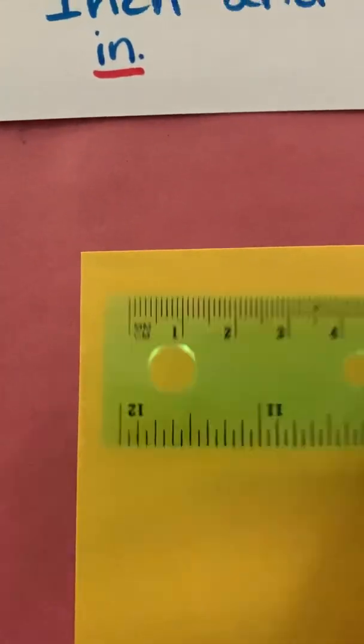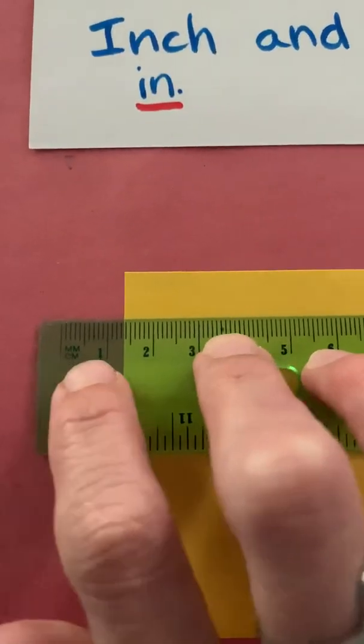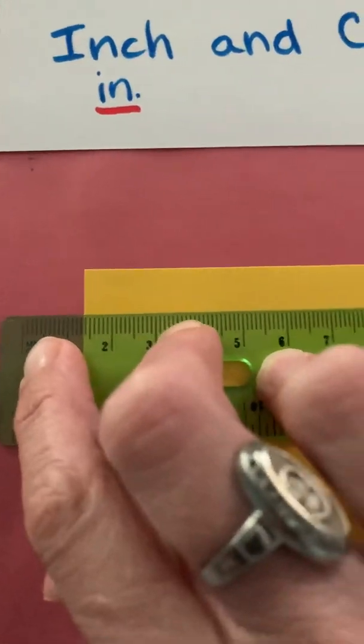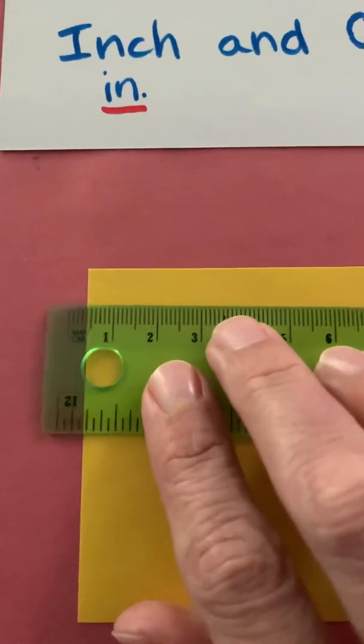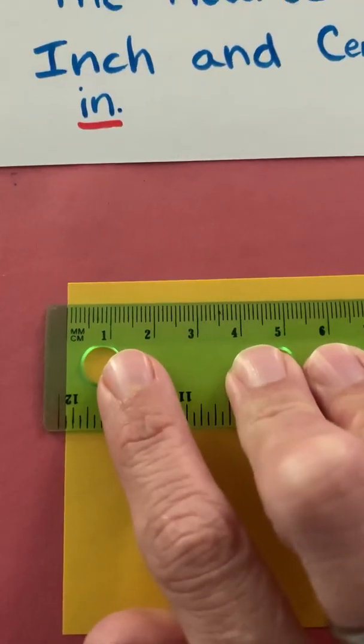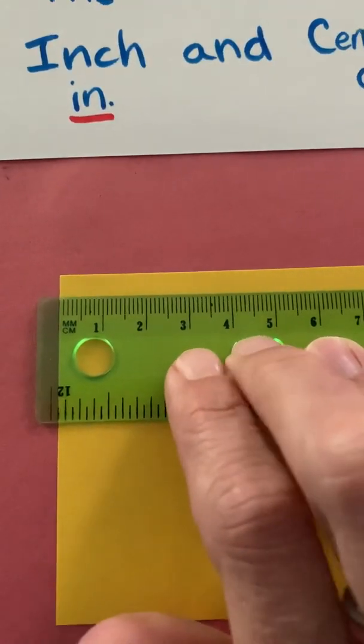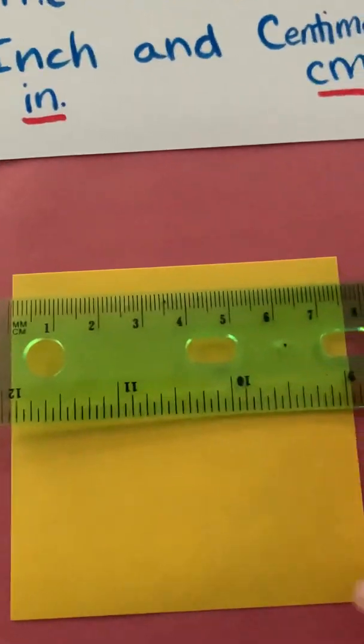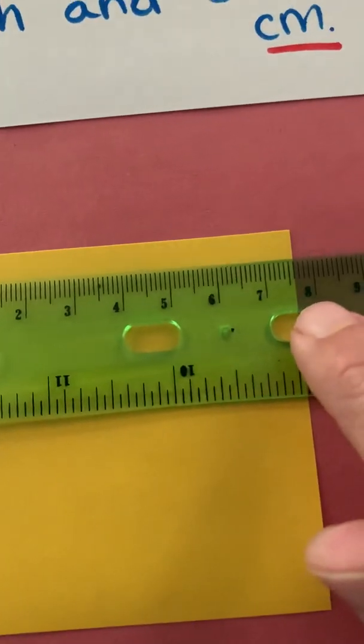Once again we're measuring. Look at the end of your ruler to determine what type of ruler you have. For this one I want to start at where that line starts. That's where it actually starts counting and measuring. So I put it there so I can see it's one centimeter, two centimeters, three, four, five, six, seven, and almost eight centimeters.